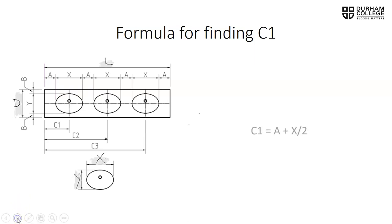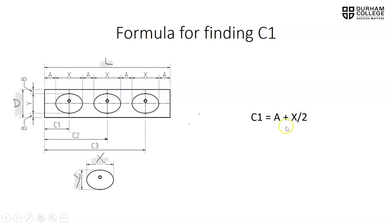To find C1, we're going to add A plus half of X, or X divided by 2. So we have A, and then half of X gets us to the center of the first lav. So: C1 = A + X/2.